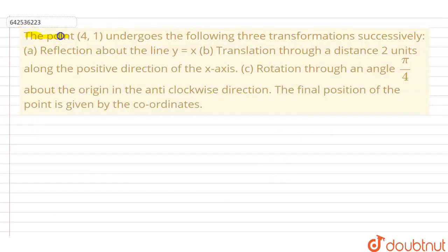Today's question is: the point (4,1) undergoes the following three transformations successively. The first is reflection about the line y equals x. The second is translation through a distance 2 units along the positive direction of x-axis. The third is rotation through an angle π by 4 about the origin in the anti-clockwise direction. The final position of the point is given by the coordinates.